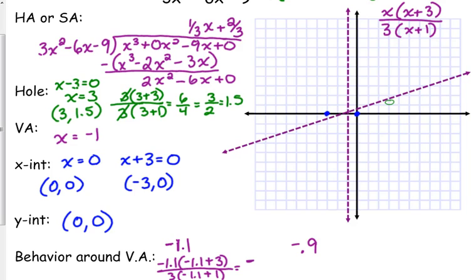The denominator: negative 1.1 plus 1 is negative times 3, so that's still negative. Negative over negative is positive. So I know that to the left of my vertical asymptote, I am headed towards positive infinity. I need to go through, hit my x-intercept, and hug that slant asymptote right there.